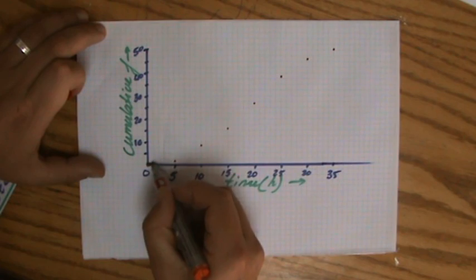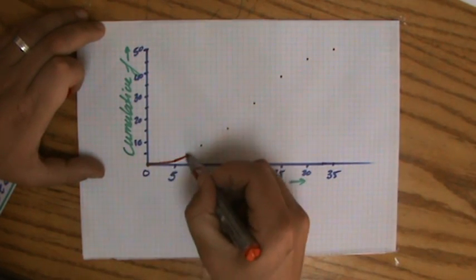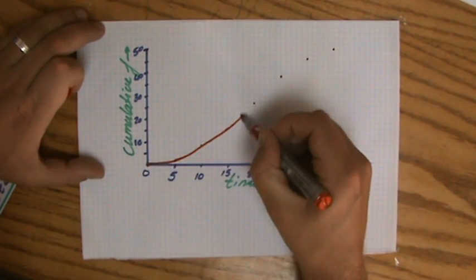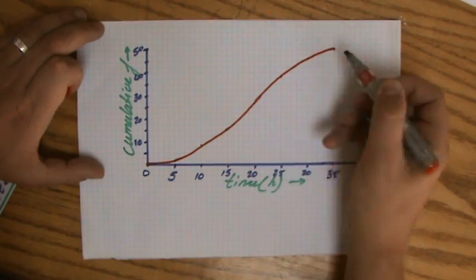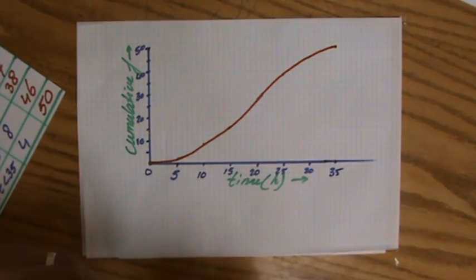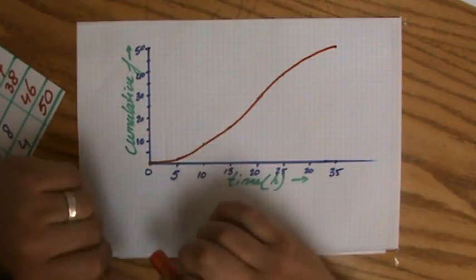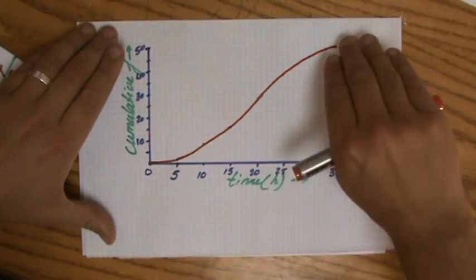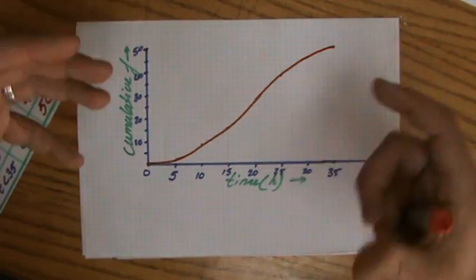But it will look roughly like this. There we go. With cumulative frequencies, always the graph looks roughly like an S, like I see here now.